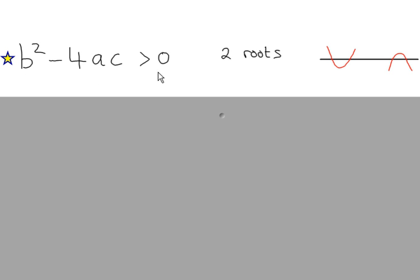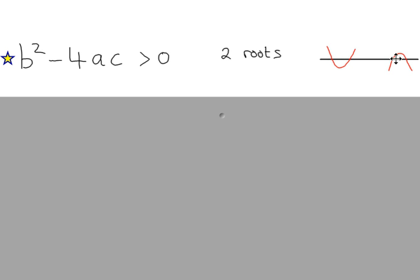You need to memorise all of these conditions for the discriminant. So b squared minus 4ac is called the discriminant. It gives you information as to the number of roots a particular quadratic equation may have. If the discriminant is a positive value — greater than zero — then you have two roots. For a u-shaped or n-shaped curve, the curve goes through the x-axis twice.